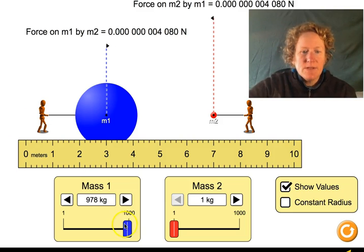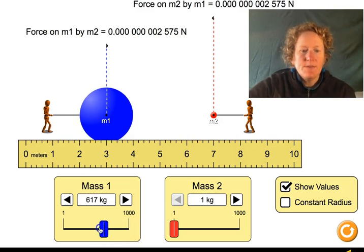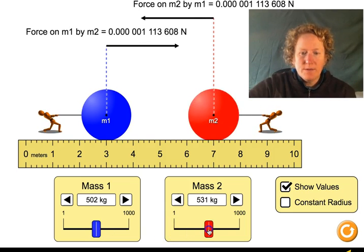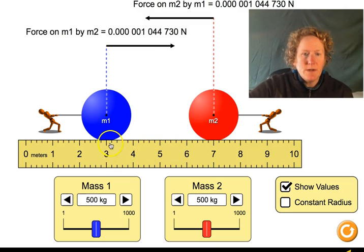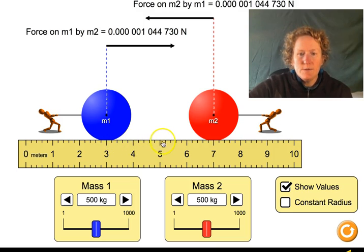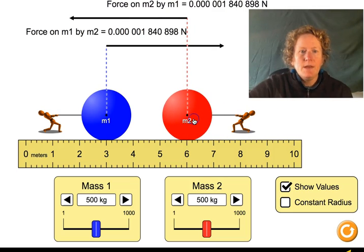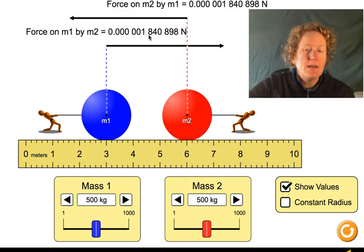So for number ten, I want to set both the masses the same because we're looking at the distance as the variable. Let's just go about 500 on both of them. Just use the clicker here to go to exactly 500 on both of them, and then we want them three meters apart. So right now, let's look at this is one, two, three, four meters, so I need to scoot this one over a little bit. Okay, now they're three meters apart, and look at the force right here, write that down in box A and number ten, box A number ten.